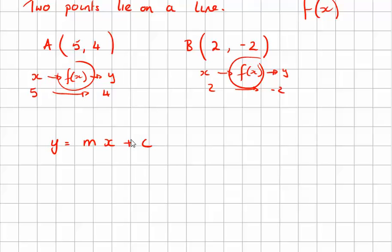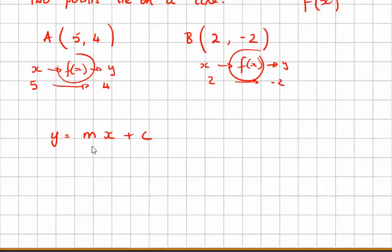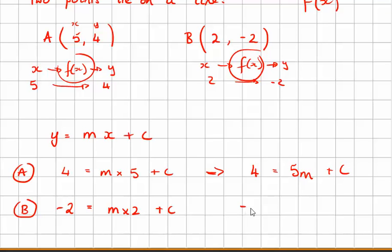We're going to set up two equations. Equation A, we know that if this is the y coordinate, this is the x coordinate. We know that 4 is equal to something times 5 plus something. And we know equation B is -2 equals m times 2 plus c. I'm going to rewrite those to be more algebraically correct: 4 equals 5m plus c, and -2 equals 2m plus c.